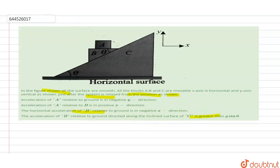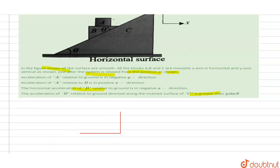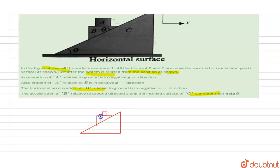Let us consider these cases one by one. First of all, let us draw the inclined plane. So let this be the inclined plane and these are the two blocks. This is block B, and above it is block A.